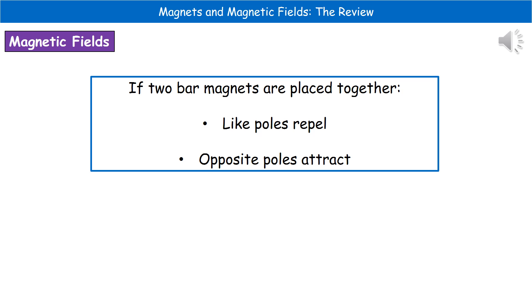which is that if we place two bar magnets together, then what we find is if we've placed their like poles, so a north and a north or a south and south together, then they will repel and push away. But if we've placed opposite poles, so a north pole and a south pole together, then they will attract each other.